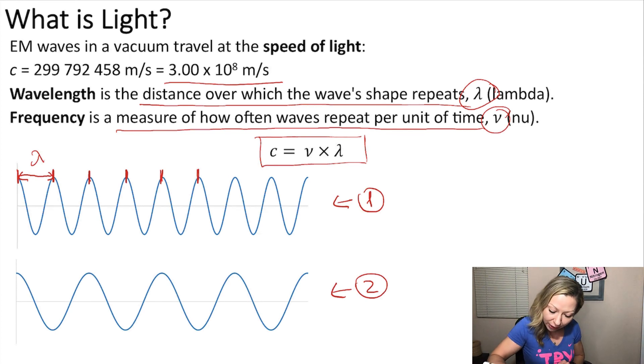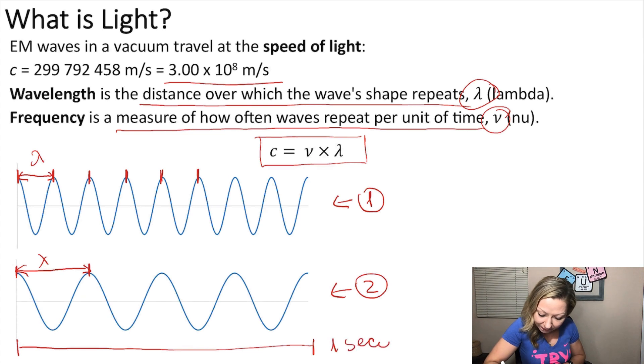So, the distance between two of these peaks is the wavelength. Now, if we look at the second wave, we can see that actually the wavelength is larger. Now, if we define this distance traveled by light as, let's say, one second,